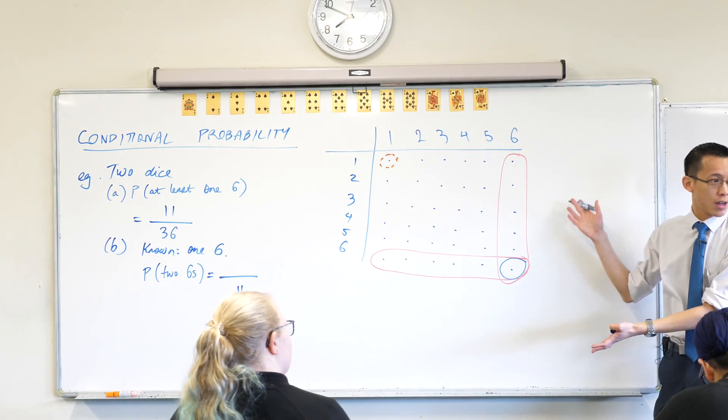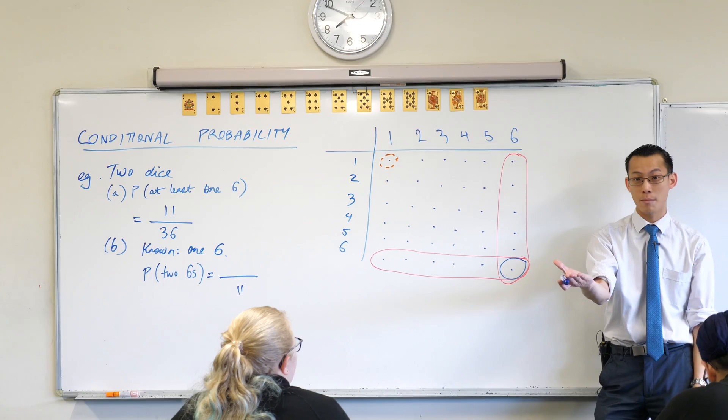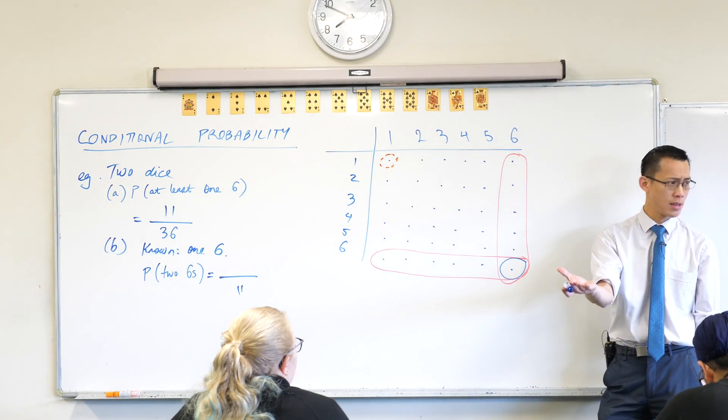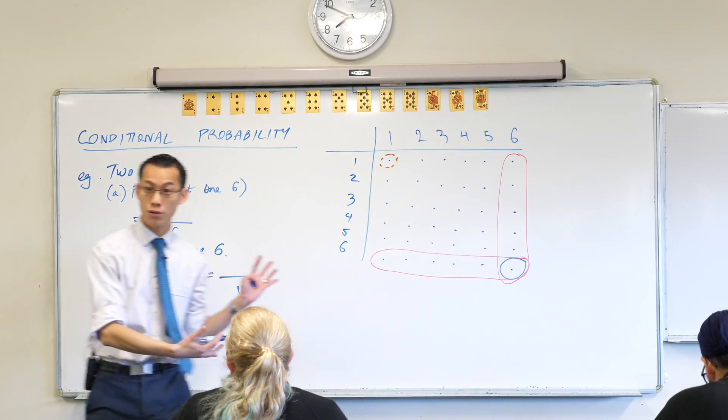Which is very counterintuitive, but hopefully this is a good enough argument for you to convince you that actually any of these could be possible. You didn't know which die I had in my hand. Does that make sense? And that's why it could be this one or it could be that one. And that's a bit counterintuitive but true nonetheless.